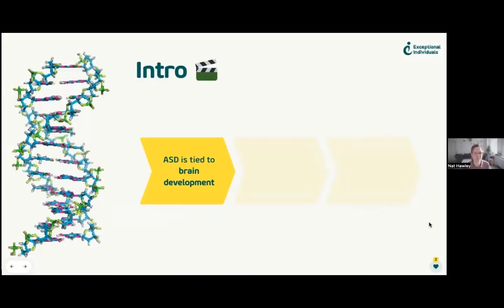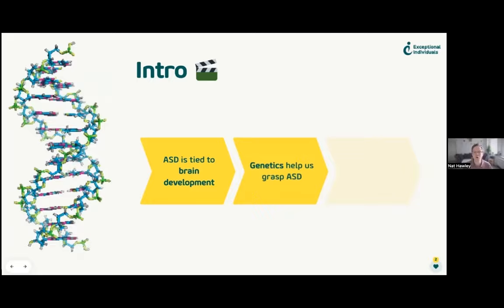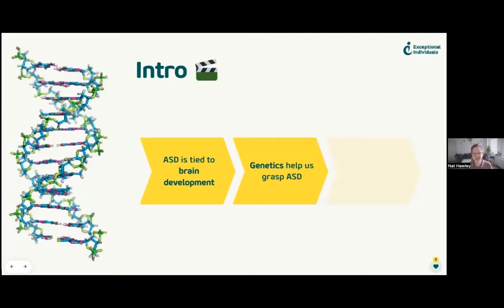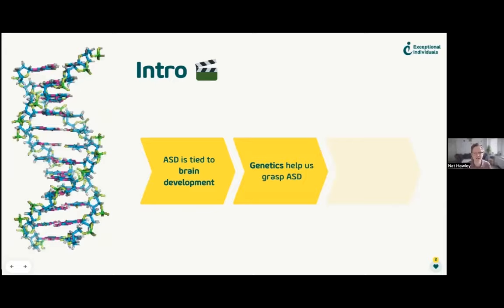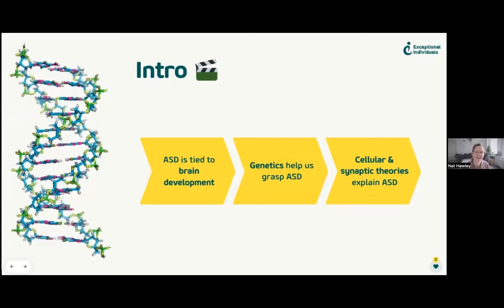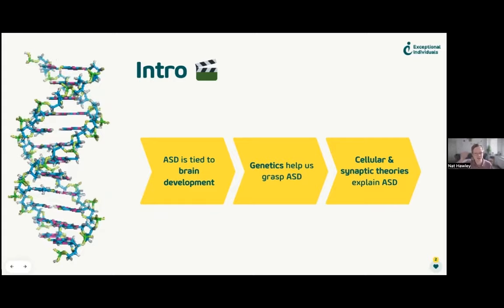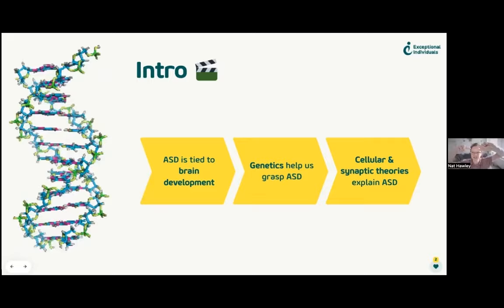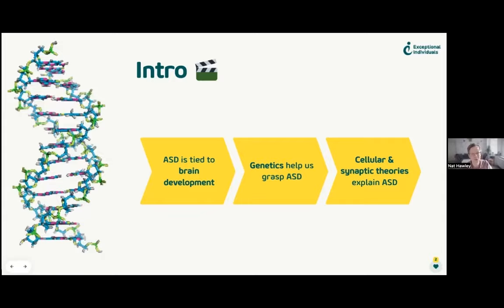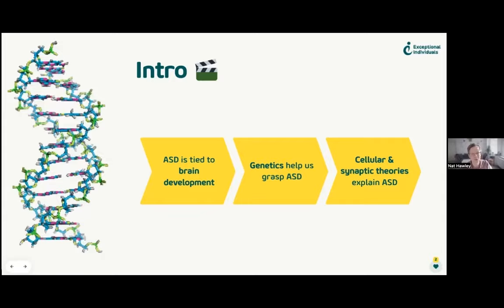We also know that genetics — our DNA — helps us understand ASD. It's still rather mysterious, but it's definitely genetic-based. Environmental factors also play a key part, but genetics is definitely one to keep an eye on. We're also going to be looking at cellular and synaptic theories explaining ASD. The synapse — the end of the neuron — is the problematic area in ADHD and schizophrenia too, so you can see how the synapse has a lot to answer for.